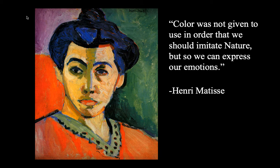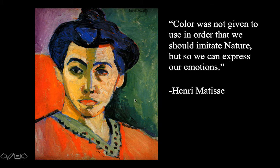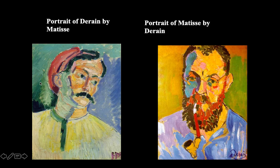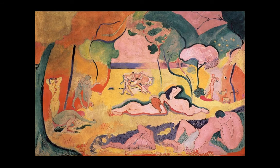Henri Matisse is probably the best-known Fauvist. This is a portrait he made of his wife. He said, 'Color was not given to us in order that we should imitate nature, but so that we can express our emotions.' He was actually a little afraid to show this artwork because he didn't think it depicted his wife very favorably. This is his image called Woman with a Hat — it looks sort of like her but it's not realistic color. Here's a good example of his joyous scenes — this is called The Joy of Life, with nude bodies in nature, dancers in the background, very bright joyous color, very linear and abstract.